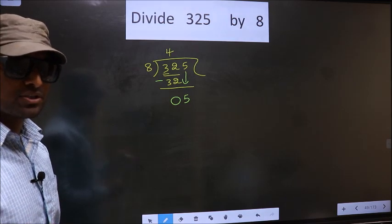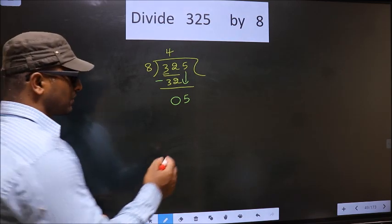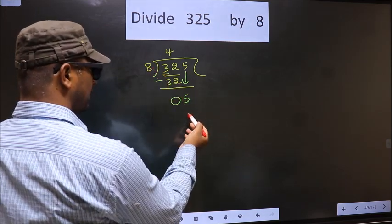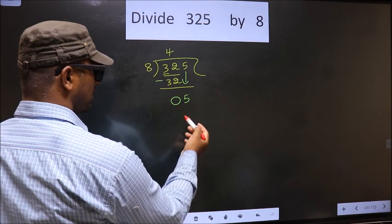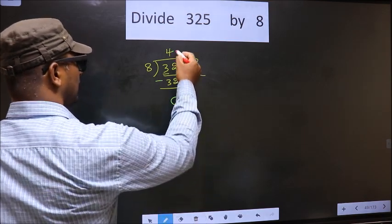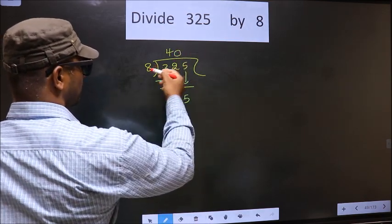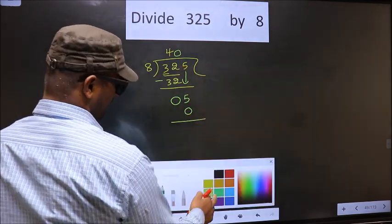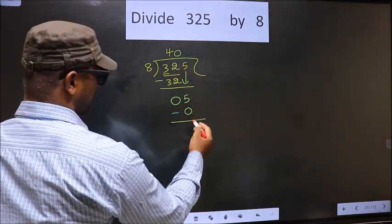Instead, what you should think of is what number should we write here. If we write 8 here, that is larger than 5. So what we do is we take 0 here. So 8 into 0 is 0. Now you subtract: 5 minus 0 is 5.